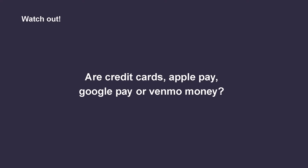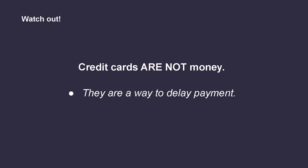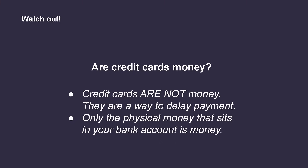Remember I asked you earlier to focus just on the physical form of money that we can use to conduct transactions? I know that's a lot to ask since most of us hardly use cash these days. Financial innovations allow us to make purchases without carrying cash around now. But are our credit cards, Apple Pay, Google Pay, or Venmo considered money? Credit cards are not money — it is a way for you to delay payment on goods and services you purchased. At the end of the month, when your credit card bill comes, you still need to use the physical money that sits in your bank account to pay the credit card companies. Similarly, Apple Pay, Google Pay, or Venmo are payment services that are either linked to your credit cards or to your bank accounts, so they aren't money either.